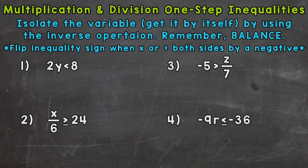When it comes to these inequalities, they're just like solving one-step equations. We need to isolate the variable, which means get it by itself, by using the inverse or opposite operation. And remember, keep everything balanced — whatever you do to one side, you have to do to the other. The difference between these inequalities and equations is equations have one solution. With these inequalities, we're going to have an infinite amount of solutions. You'll see what I mean by that as we go through our four examples.